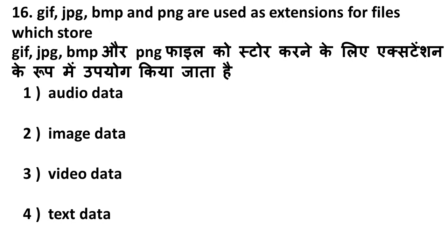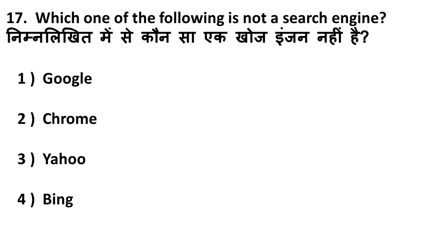Next question: JPG, BMP, PNG are extensions for files that store what? These are extensions for image data. Next question: which of the following is not a search engine? We generally use Google, Yahoo, and Bing — but Chrome is not a search engine, it is a browser. Google, Yahoo, and Bing are all search engines. Remember: Chrome is a browser, not a search engine.